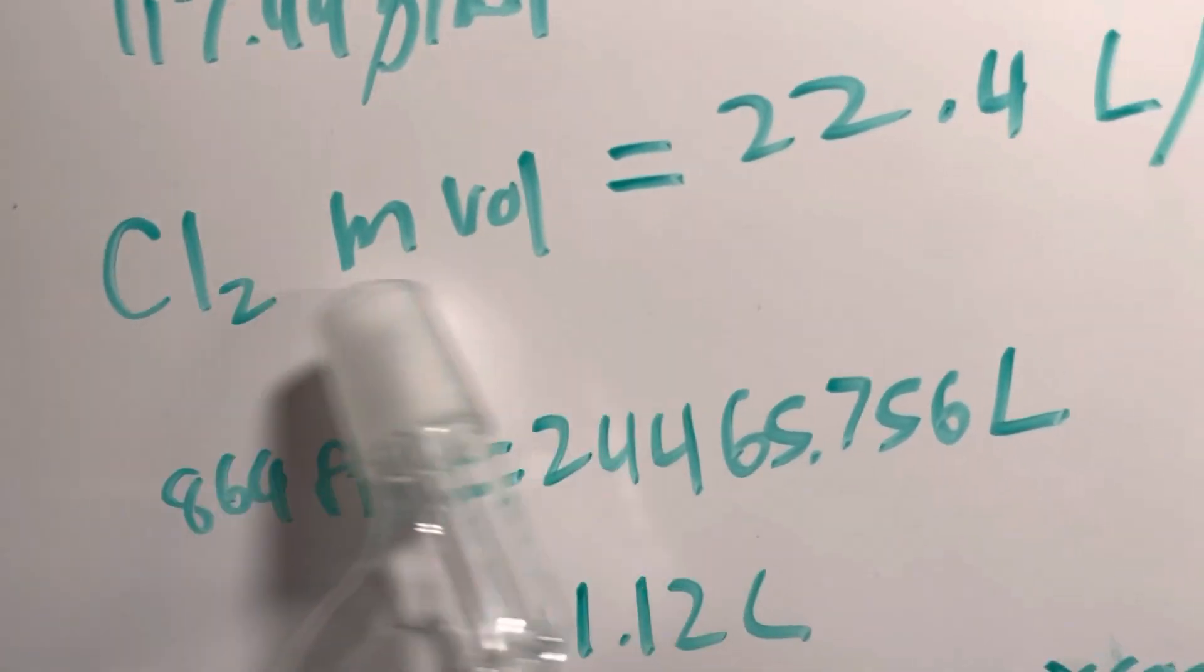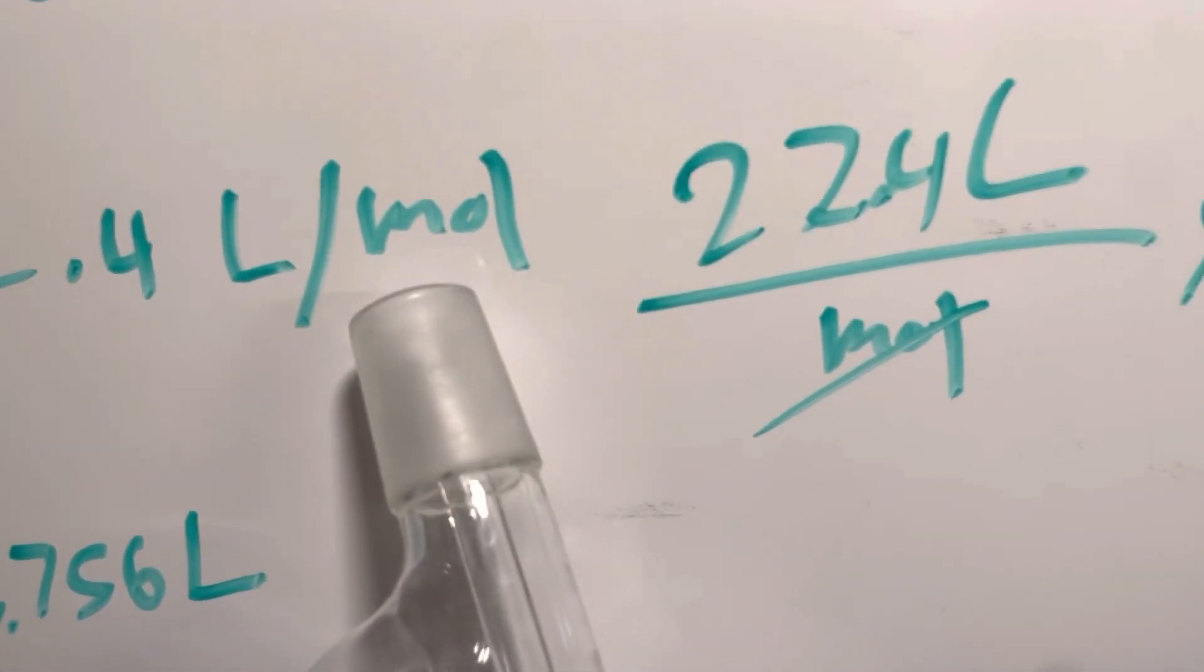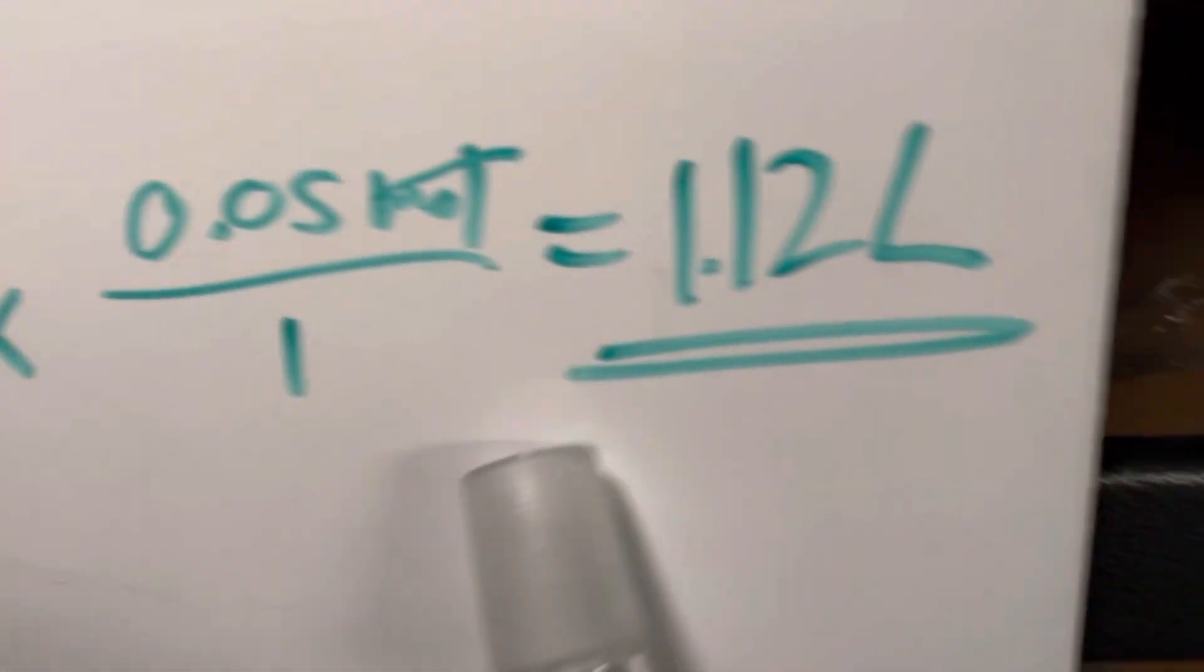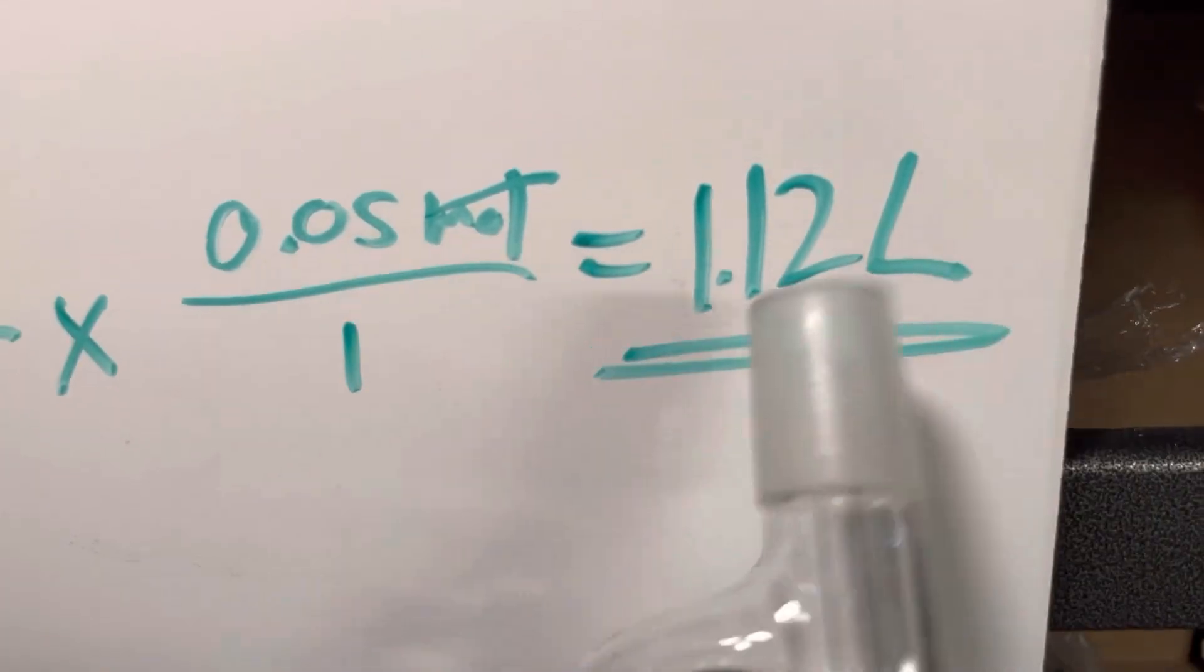Now using the molar volume of chlorine, we know that we'll get 1.12 liters of chlorine. That's a lot, actually. It's like a fourth of a gallon, which I guess doesn't seem like much, but it is.